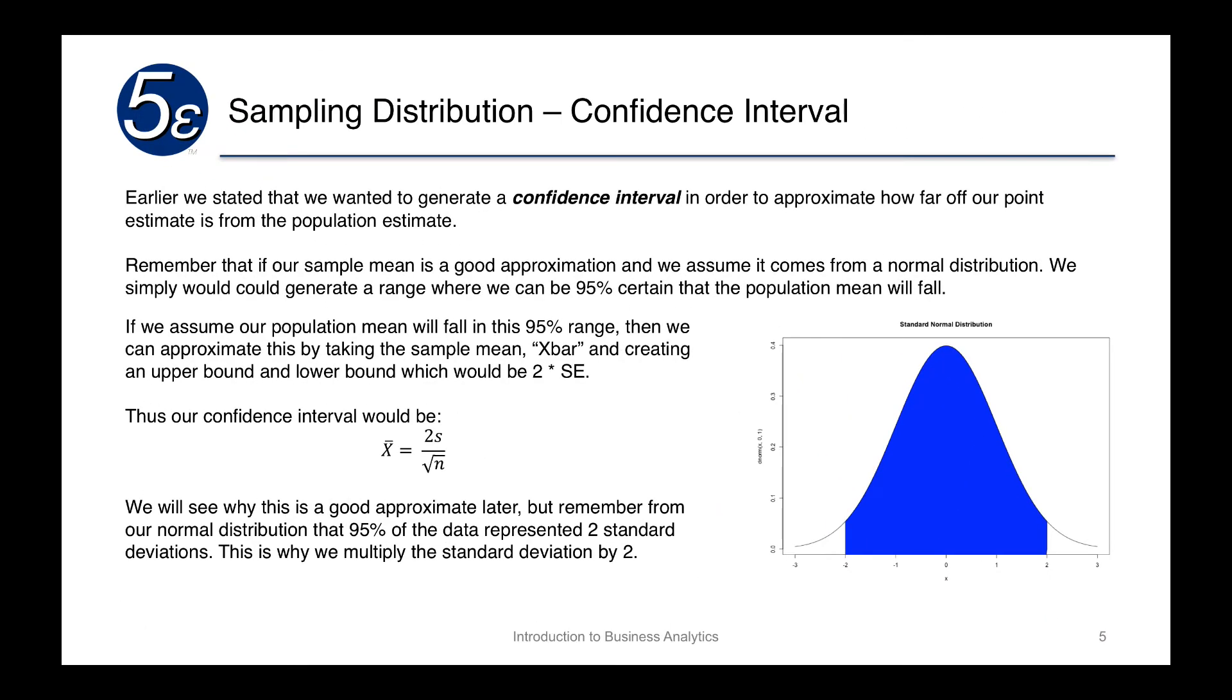Now in previous slides, we stated that we wanted to generate a confidence interval in order to approximate how far off from our point estimate is the population estimate. If our sample mean is a good approximation, and we assume it comes from a normal distribution, we could generate a range where we can be certain 95% that the population mean will fall. As we can see in this chart on the right, here's our normal distribution.